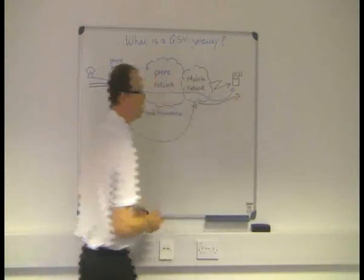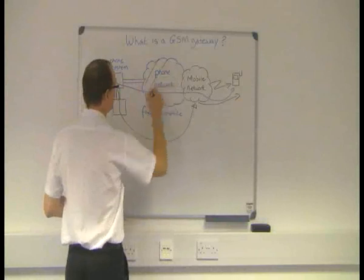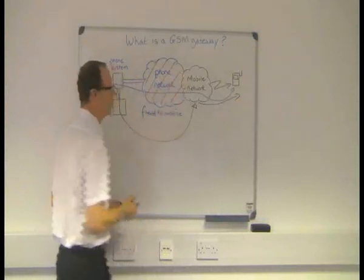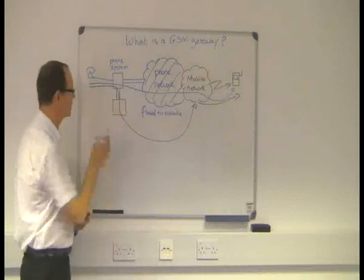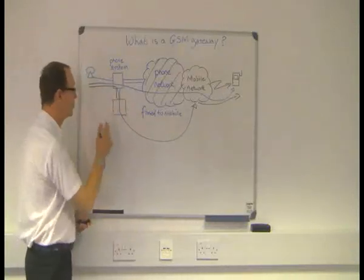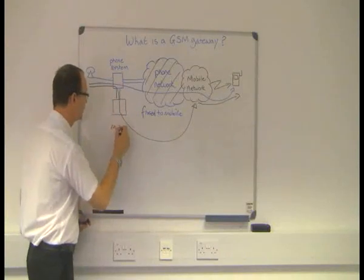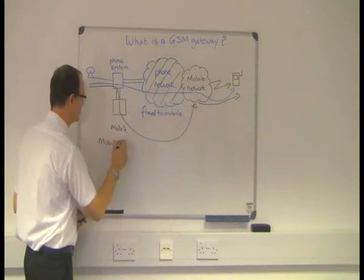And what we've done is we've effectively bypassed this part of the network. And because the gateway is a device connecting to the phone system that converts a call into a mobile call, this is now a mobile-to-mobile connection.